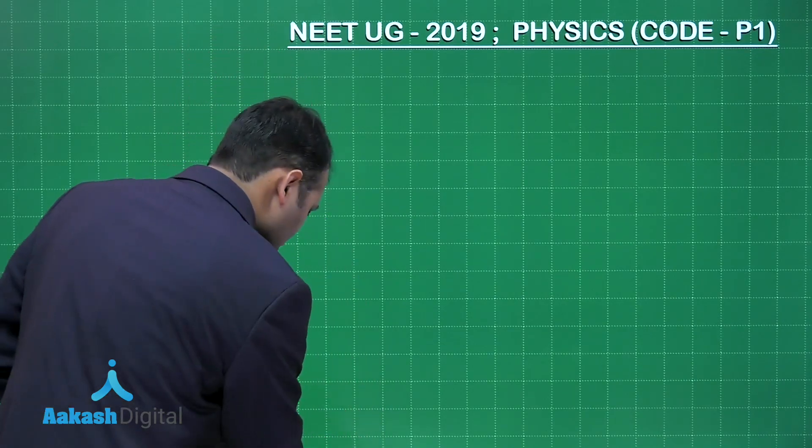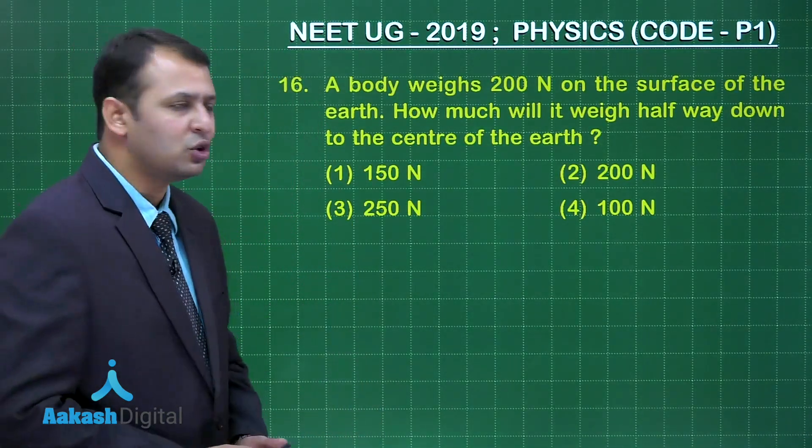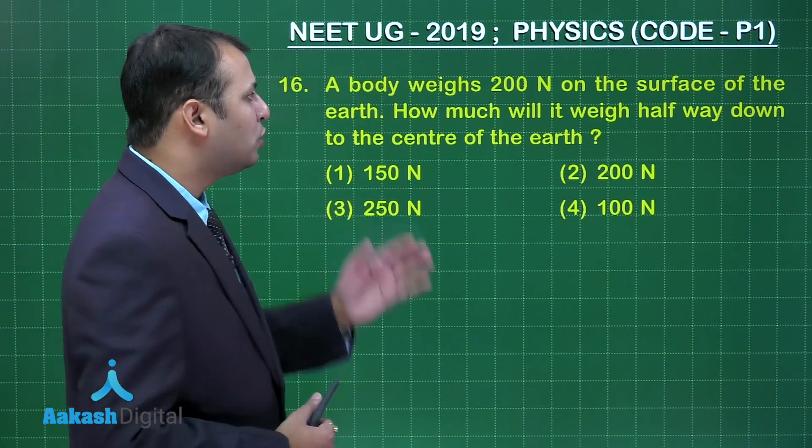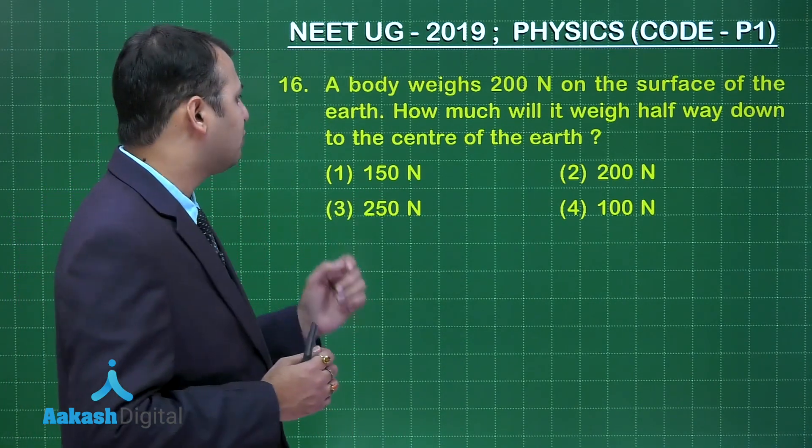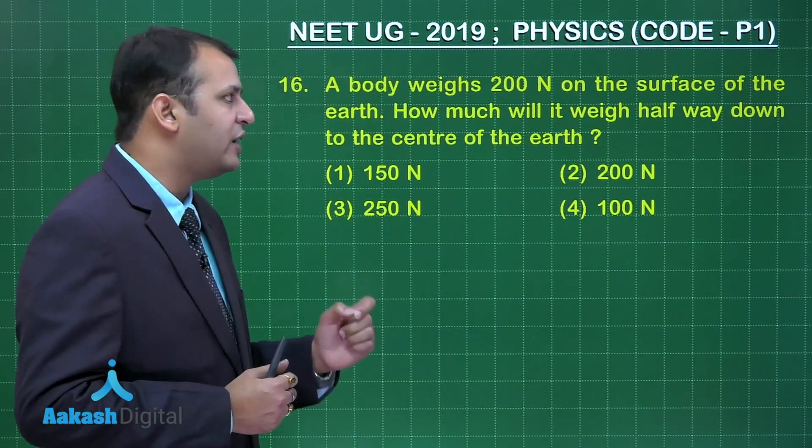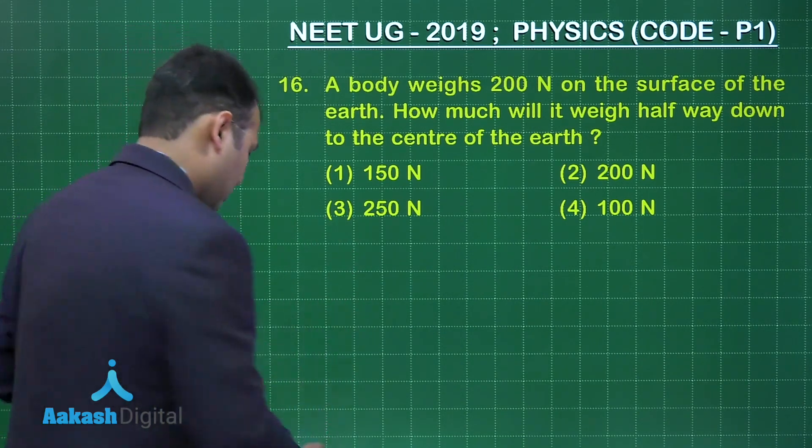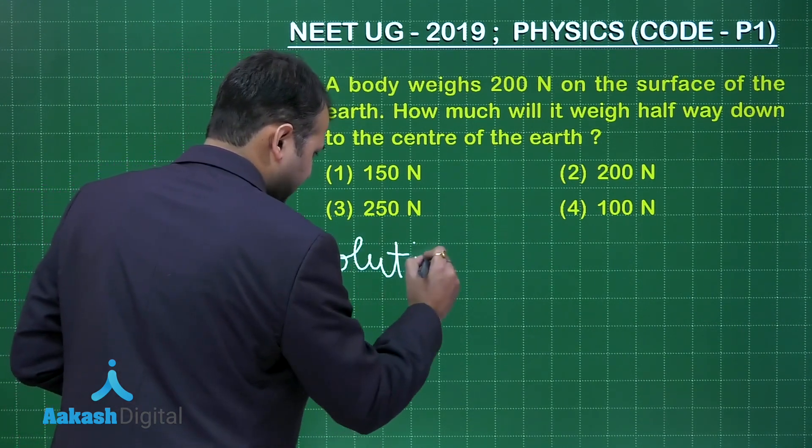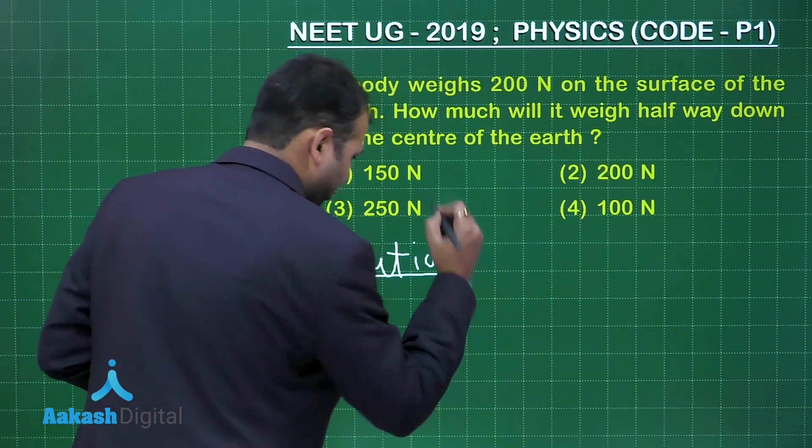Let's take our next question, that is question number 16. This question belongs to chapter gravitation. A body weighs 200 Newton on the surface of Earth. How much will it weigh halfway down to the center of Earth? So let's start with the solution.